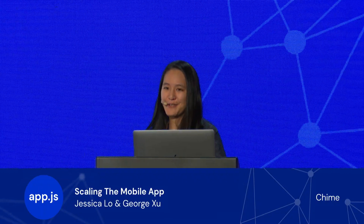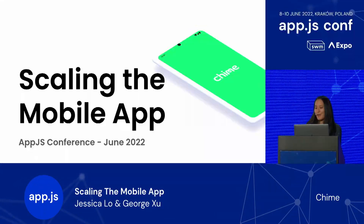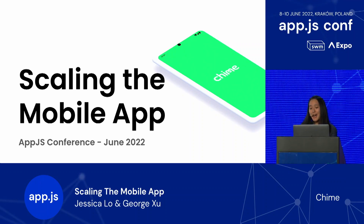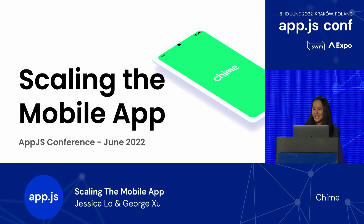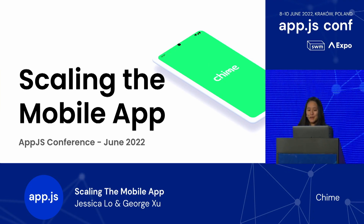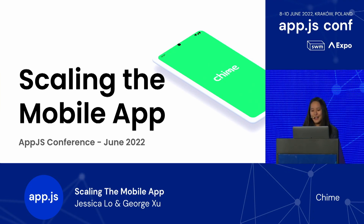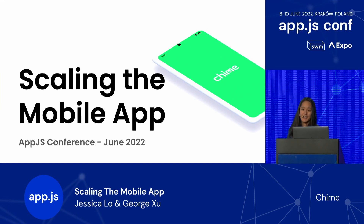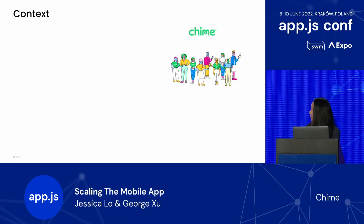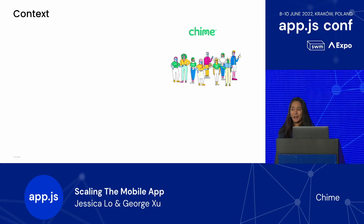For folks who aren't too familiar with Chime, we're one of the largest challenger banking apps operating in the United States. Our focus is on innovating new products for our members and pushing the industry forward. We've done this by eliminating a lot of fees, focusing on our members' needs like providing additional liquidity and helping build credit scores. We've been fortunate that members have found value in our product along the way, and we aren't done yet.